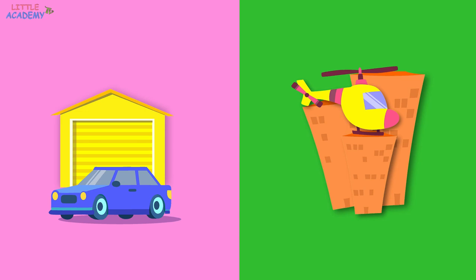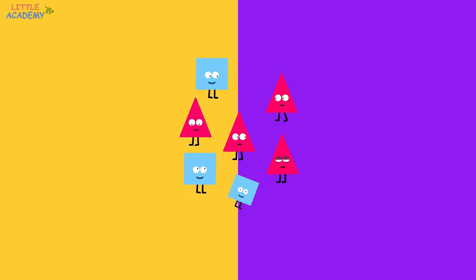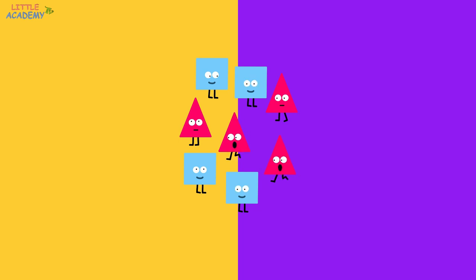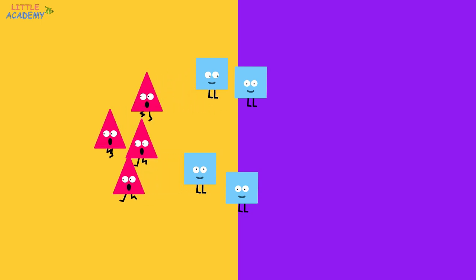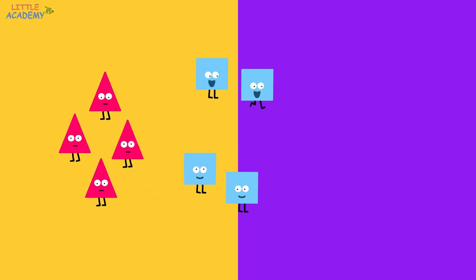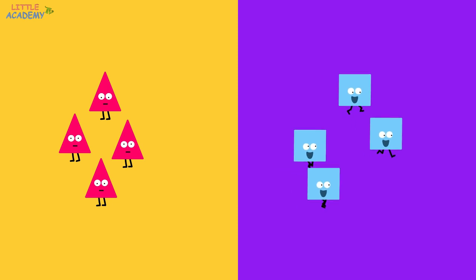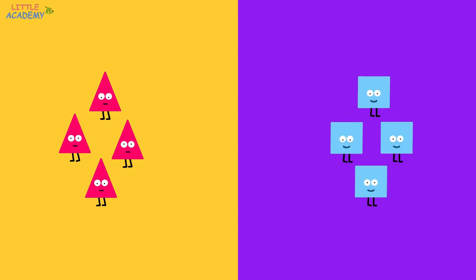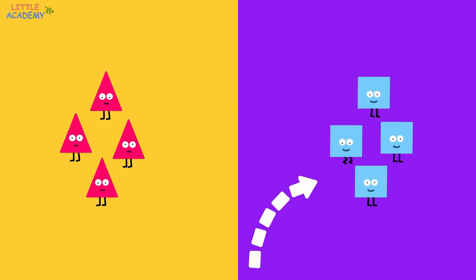Great job! Let's do it one more time. The color yellow is on the left. The color purple is on the right. Oh, look! Who just showed up on the screen? These are funny triangles and squares. What are they going to do? The triangles ran to the left. And the squares ran to the right. This is the left side. This is the right side.